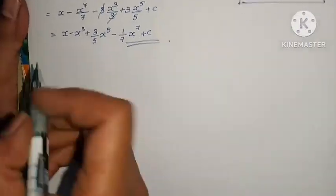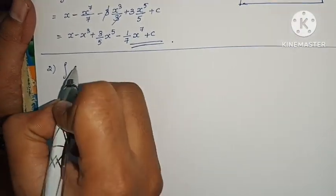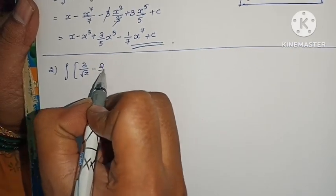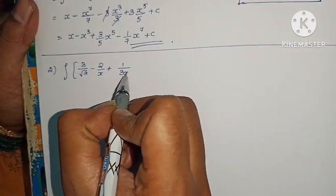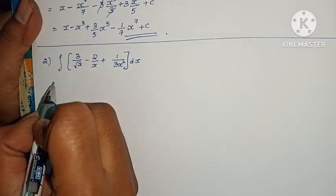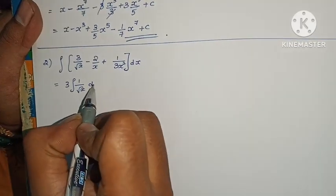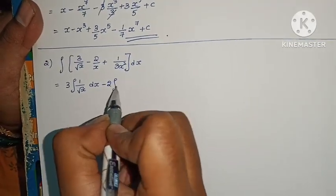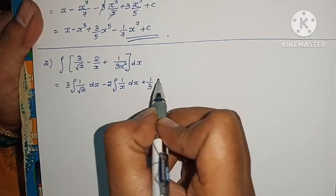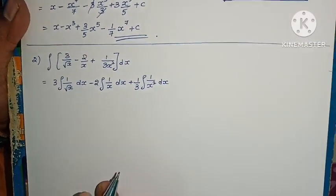And then the problem is complete. Very easy, isn't it? Now the second question: integral of (3 by root x minus 2 by x plus 1 by 3x squared) dx. Separating the integration: 3 into integral 1 by root x dx, minus 2 into integral 1 by x dx, plus 1 by 3 into integral 1 by x squared dx.